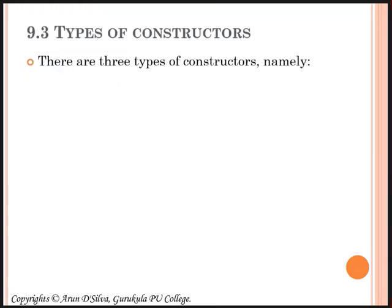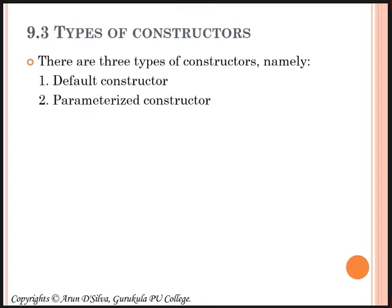The types of constructors: there are three types of constructors mainly used in C++. They are: default constructor, parameterized constructor, and copy constructor. We are going to see each one of them. We should know properly what is a default constructor, what is a parameterized constructor, and what is a copy constructor, and how to use and define them in our C++ program.